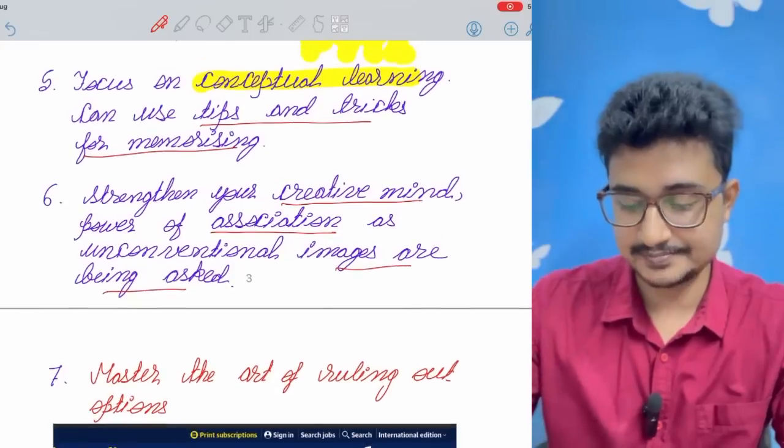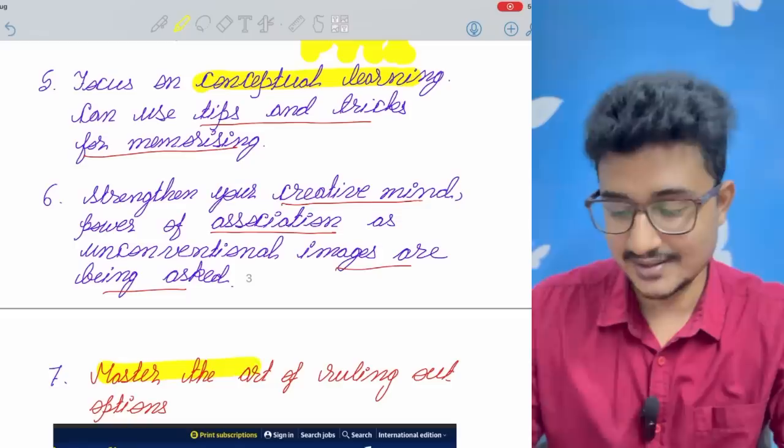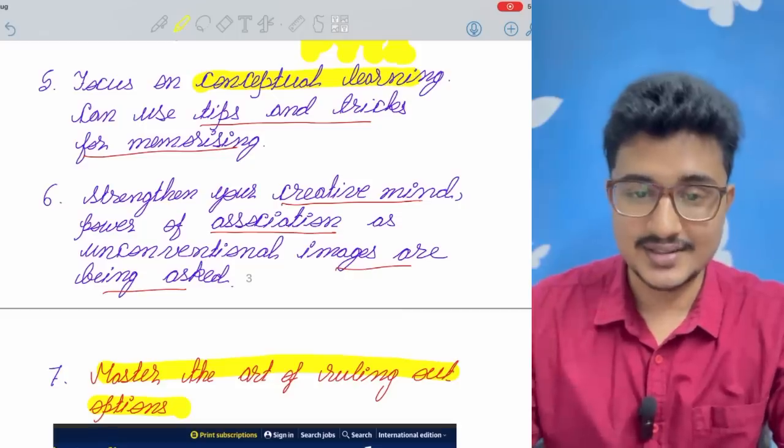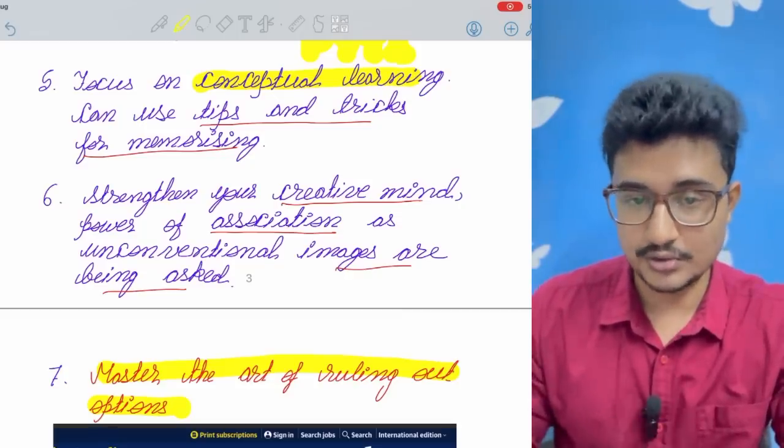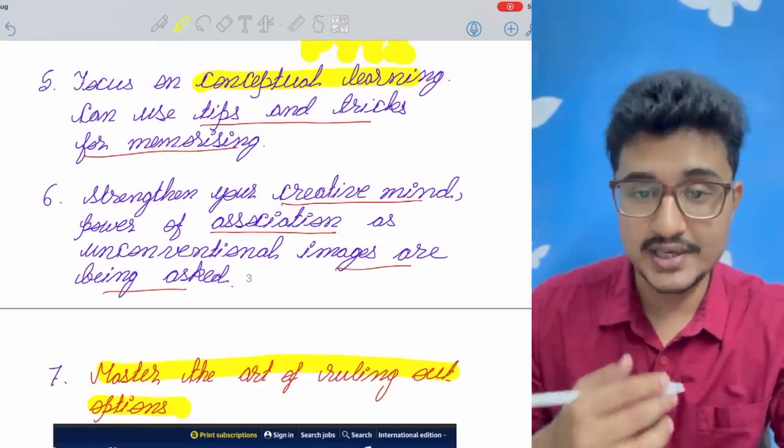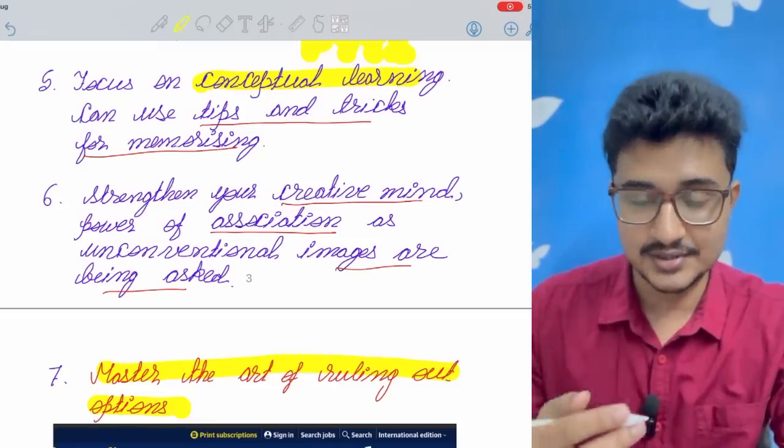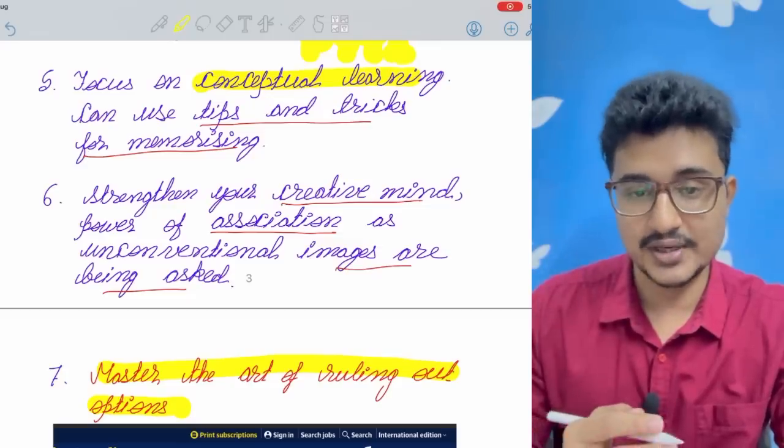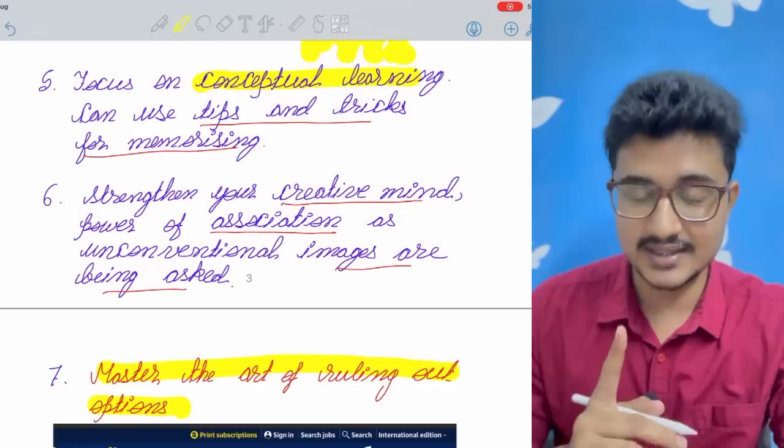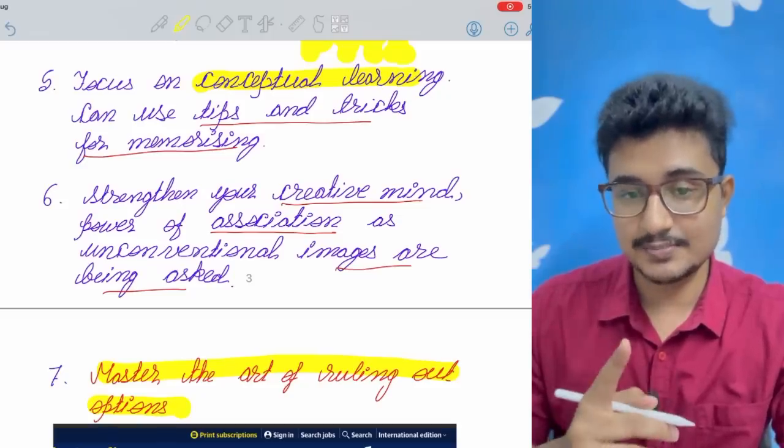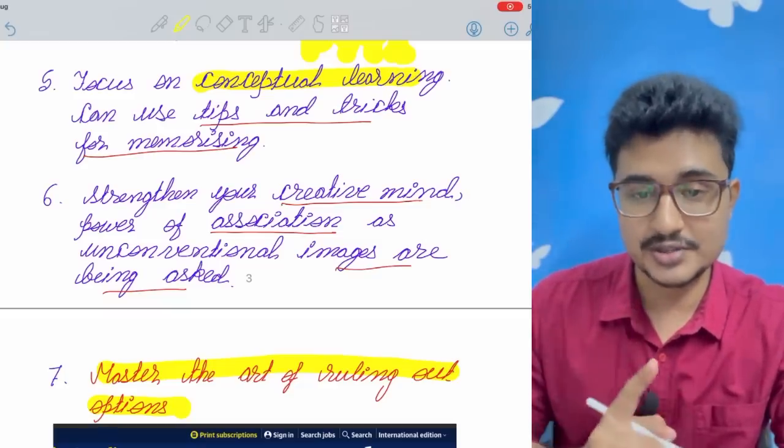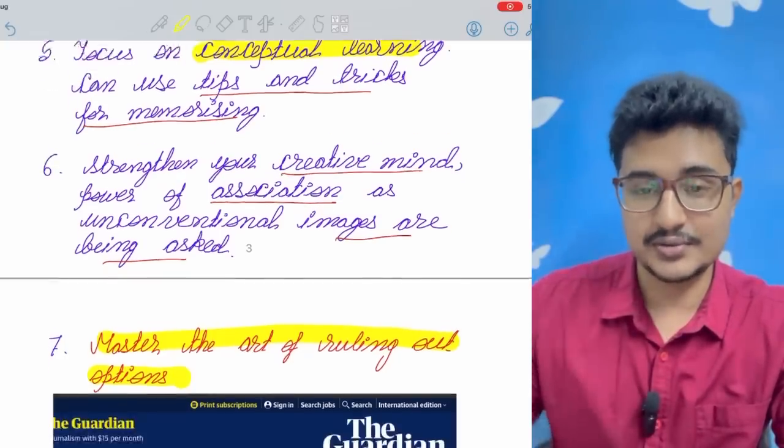The last thing I would like to say is master the art of ruling out options. You can see in the end of the video also how to rule out options and I have a series on this to watch them because ruling out option only helps to secure a good rank. You know only 120 questions but if you target for 170 corrects or 160 plus corrects, 40 to 50 you have to mark by ruling out options.